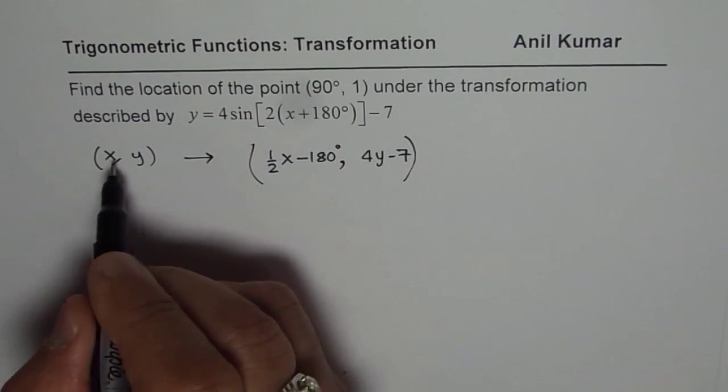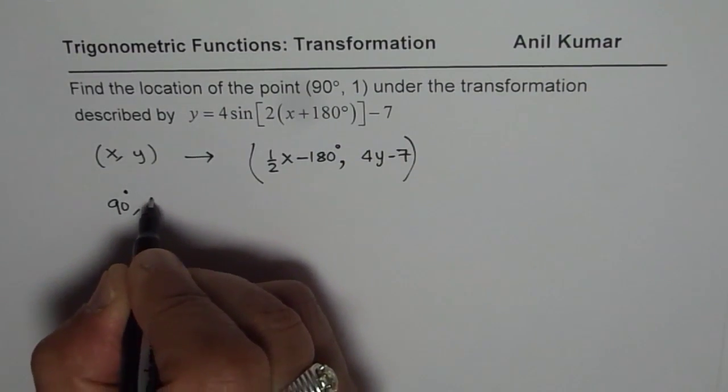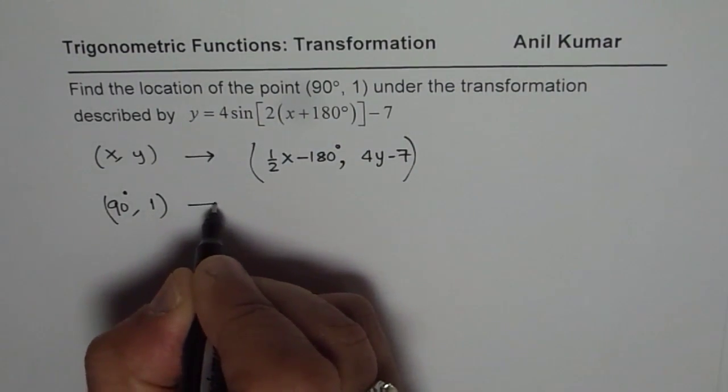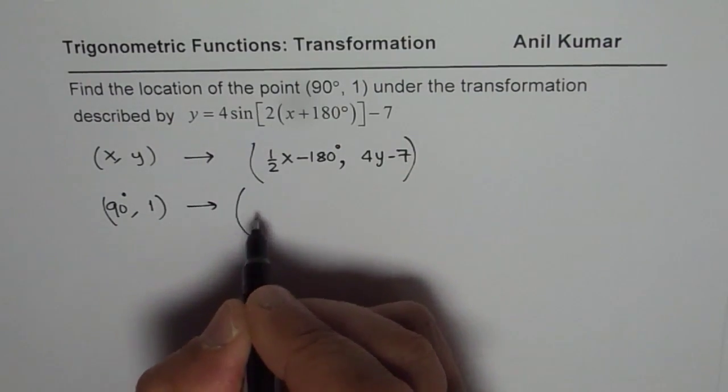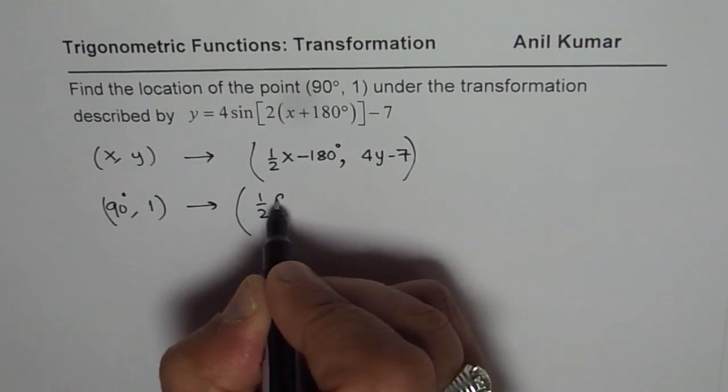What we are given here is that x is 90 degrees. So x is 90 degrees, y is 1 for us. So we can find the change here. The change will be half of 90 degrees minus 180 degrees.